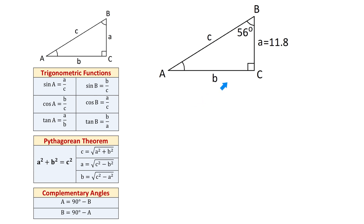Now let's solve the given triangle. Here we are given side A and angle B, and we have to find sides B and C and angle A. There are multiple ways of starting this problem. For example, we can use the cosine function to find the hypotenuse C, or the tangent function to find side B, since both functions contain angle B and side A. We can also start by finding angle A using the formula A equals 90 degrees minus angle B.